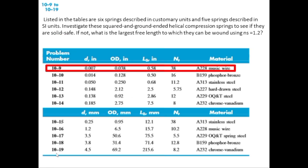The given data for problem 10.9 is: wire diameter d = 0.007 inches, outside diameter OD = 0.038 inches, free length L0 = 0.53 inches, total coils NT = 30, and the spring material is music wire.